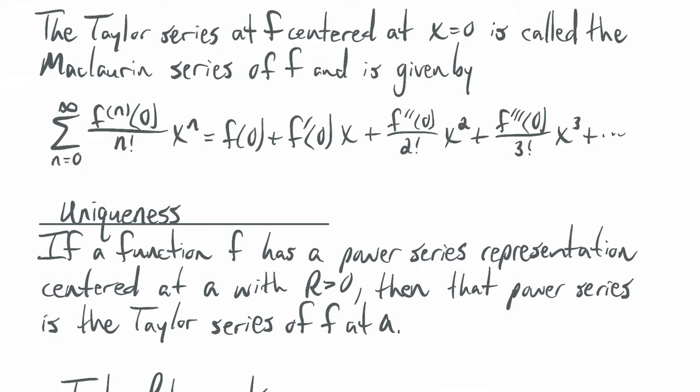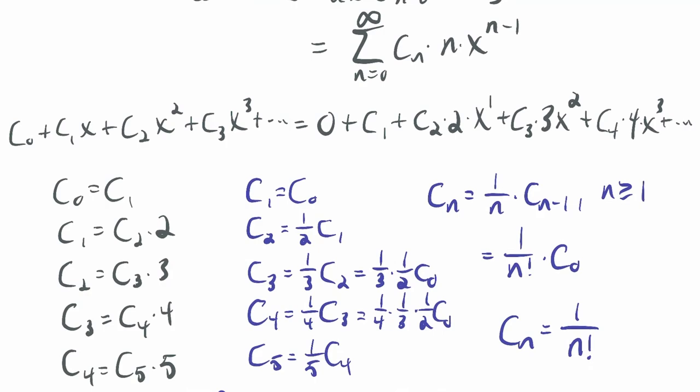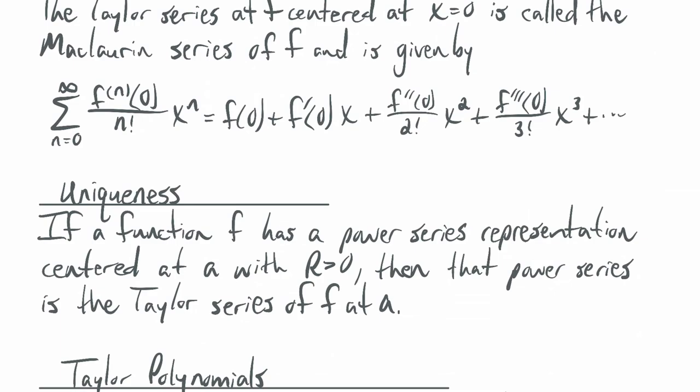Uniqueness: if a function f has a power series representation centered at a with radius greater than 0, then that power series is the Taylor series of f at a. So the power series we found for e to the x — even though I didn't use the formula directly — is the McLaurin series, because it converges with a nonzero radius. Any different-looking series that also converges is actually equivalent.